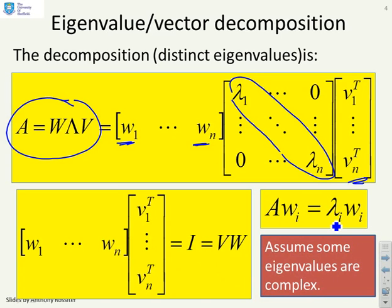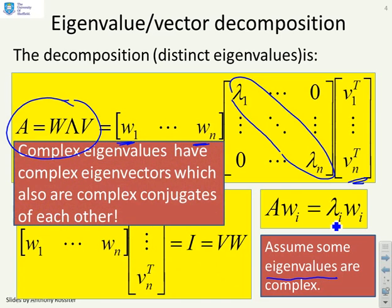What we are going to make different in this video is we are going to assume that some of the eigenvalues are complex. But a key point is that complex eigenvalues have associated to them complex eigenvectors, and these all must appear as complex conjugates. So eigenvalues appear in complex conjugate pairs and the corresponding eigenvectors must also appear as complex conjugate pairs.